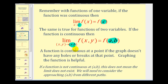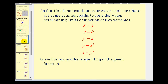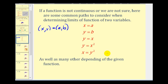So if you have some graphing software where you can graph in 3D, that can often be helpful. It's important to remember that if a function is not continuous at (a, b), this does not mean the limit does not exist — we will need to consider approaching (a, b) from different paths. If (x, y) is approaching the point (a, b), we could consider letting x equal a or y equal b. We may also consider paths like y = x, y = -x, y = x², x = y², and so on.